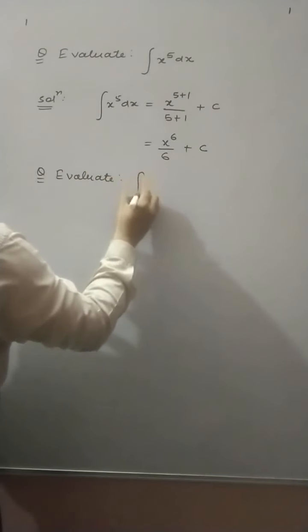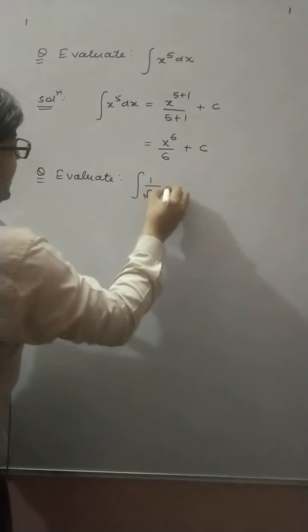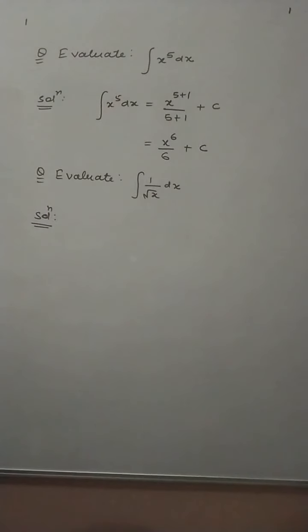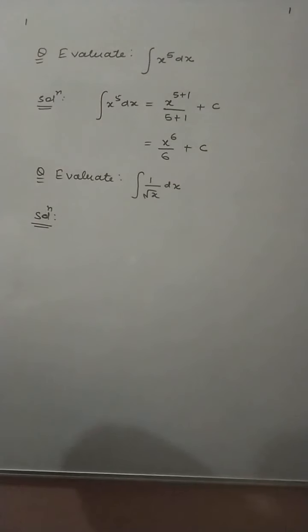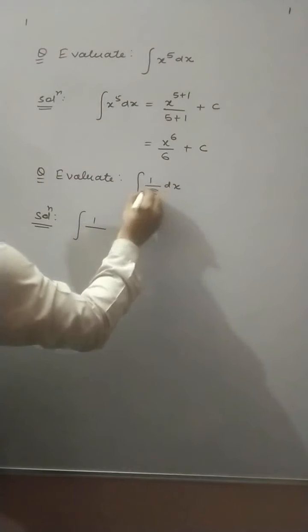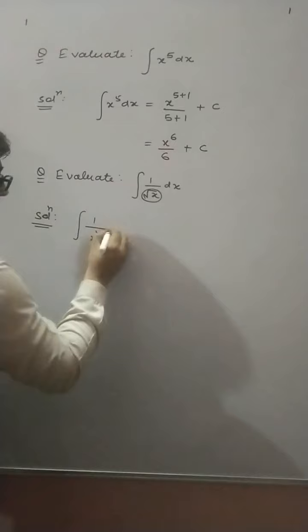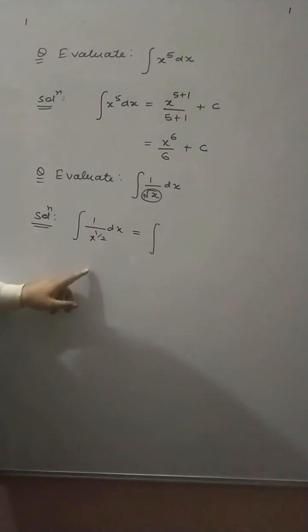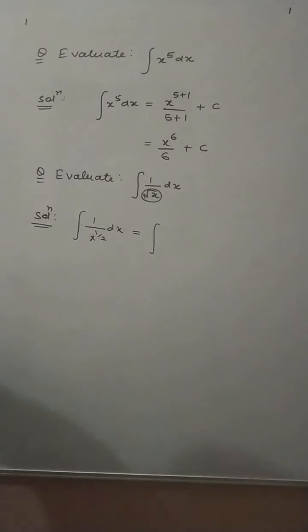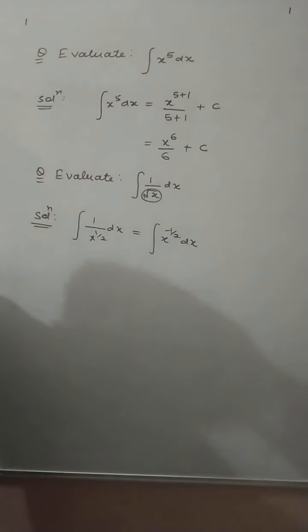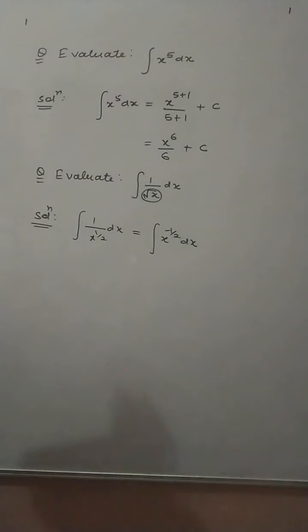Next question: evaluate the integral of 1 divided by square root of x dx. Firstly, you will express this in powers of x. We know that square root of x means x raised to power 1 by 2. So when you shift x raised to power 1 by 2 to the numerator, you get x raised to power minus 1 by 2.